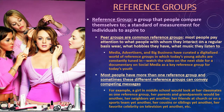Most people have more than one reference group, and these can sometimes have competing messages with each other. For example, a girl in middle school might look at her classmates as one reference group, while her parents and grandparents are another, her neighbors yet another, and her friends at church or on a sports team another. Siblings, cousins, and favorite celebrities on TV are all different reference groups. Depending on how strongly we feel inclined toward any one of them, the messages from that group might outweigh all the others.